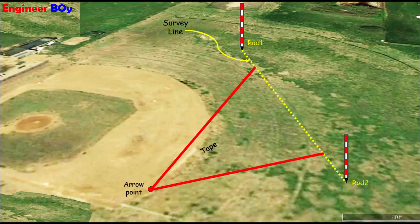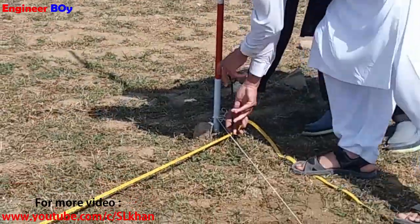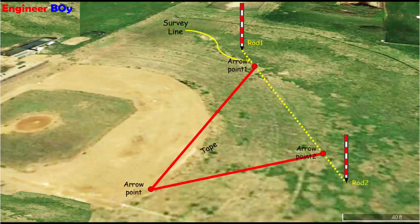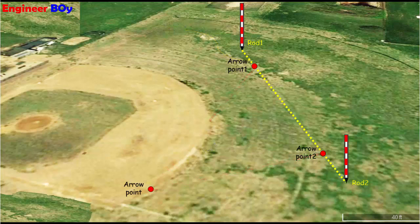Let's specify the intersecting points with the help of arrows. After specifying the intersecting points on the line, we will locate the midpoint of the intersecting points, for which we just measure the distance between those intersecting points and then make it half, which gives us the midpoint.